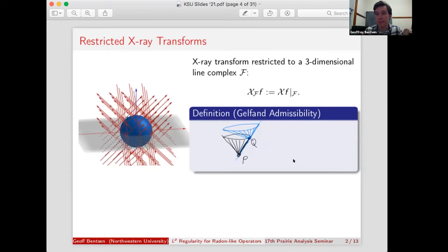And one example of these is the restricted x-ray transform pictured here. It's the set of all lines which make a 45-degree angle with the horizontal plane. In other words, it's the set of all light rays. That's a Gelfand admissible line complex, and so it admits an inversion.